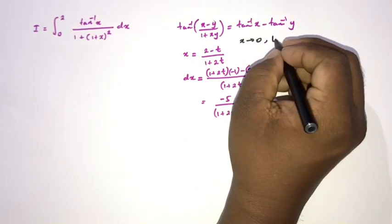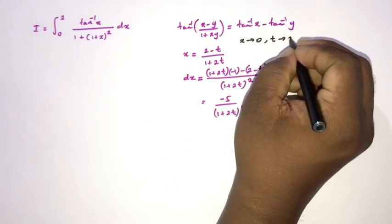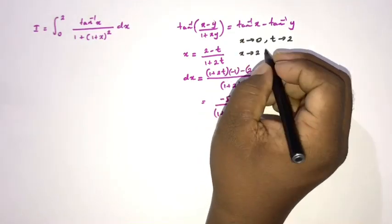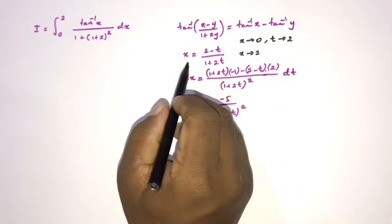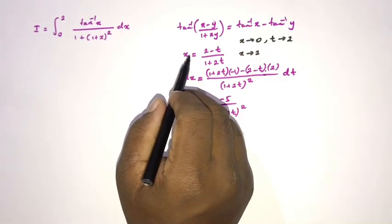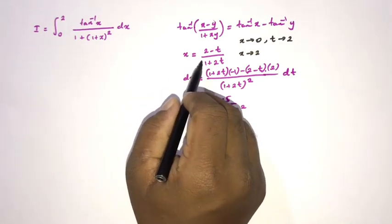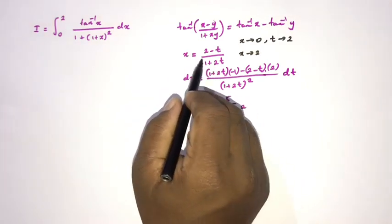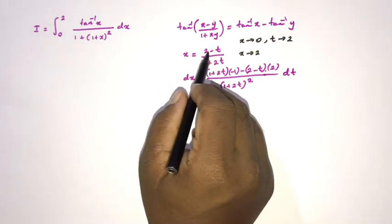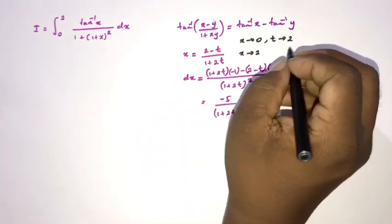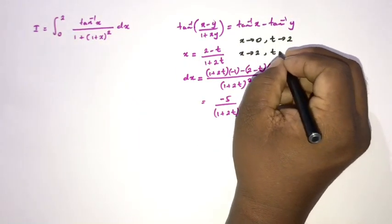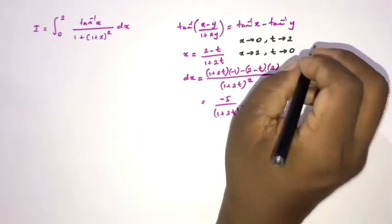When x approaches 0, solving (2 minus t)/(1 plus 2t) = 0 gives t equals 2. When x approaches 2, solving gives t equals 0. So the new limits run from t equals 2 down to t equals 0.